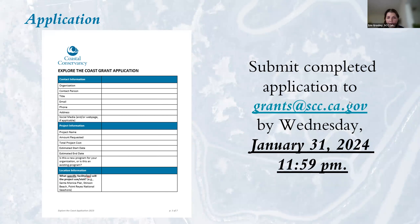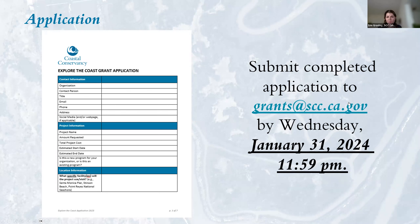The cover page asks for contact information such as organization, contact person, title, phone number, and website or social media. Next is project information: list the project name, amount of funds requested, and estimated start and end dates. There's a spot to indicate whether your project is new or existing for your organization. The cover page ends with location information — what facilities or places will be utilized, meaning where on the coast you plan to go. Submit completed applications to grants@scc.ca.gov by 11:59 PM on January 31st, 2024.